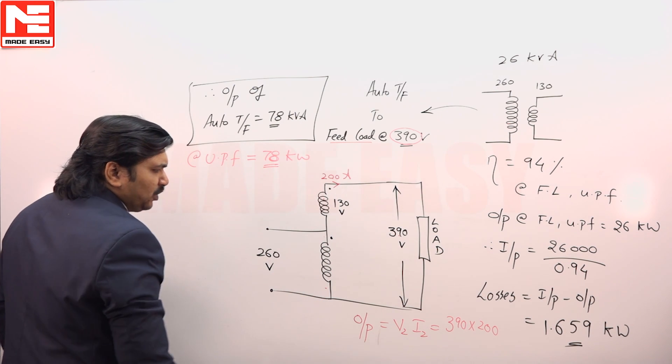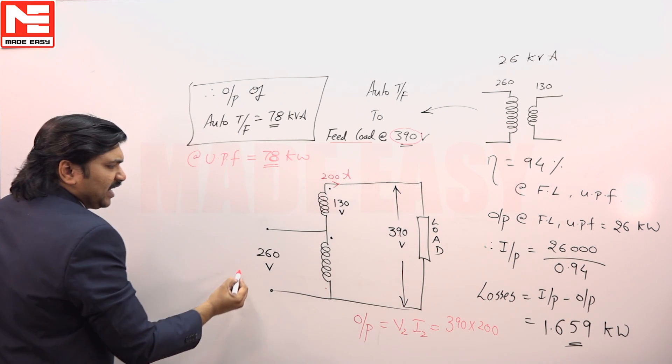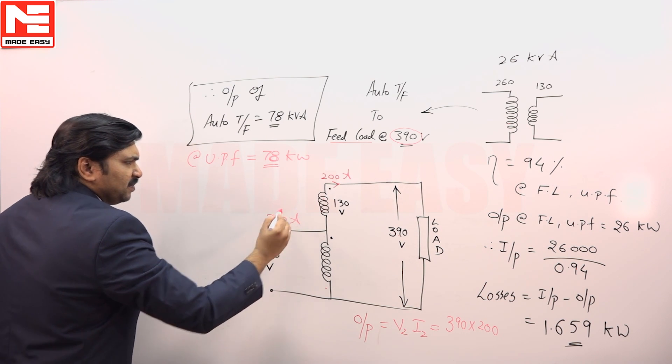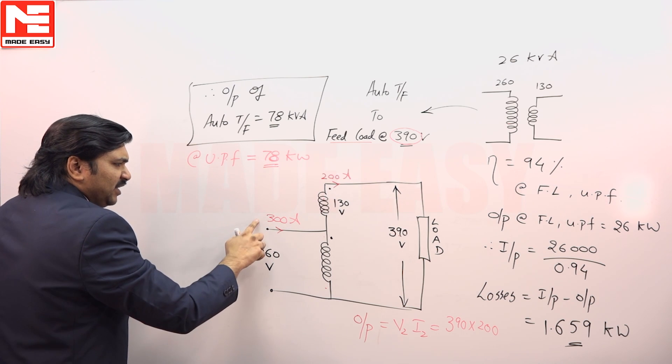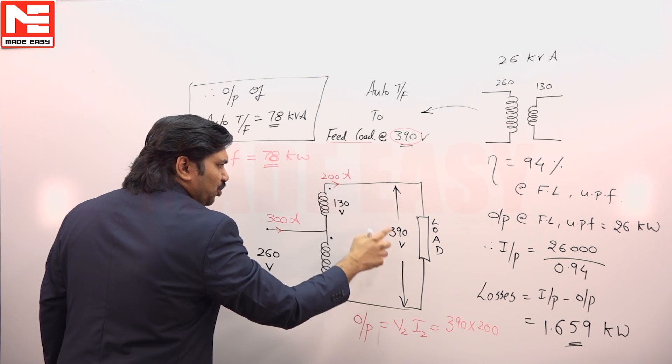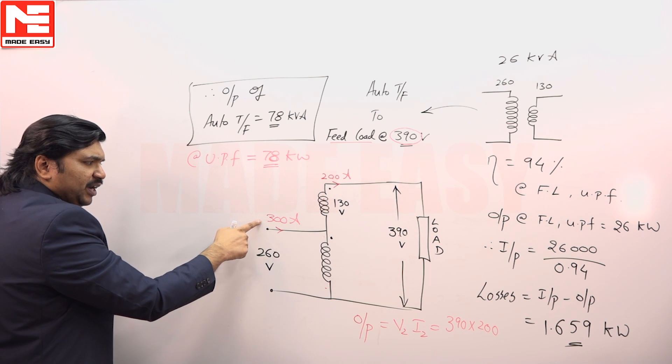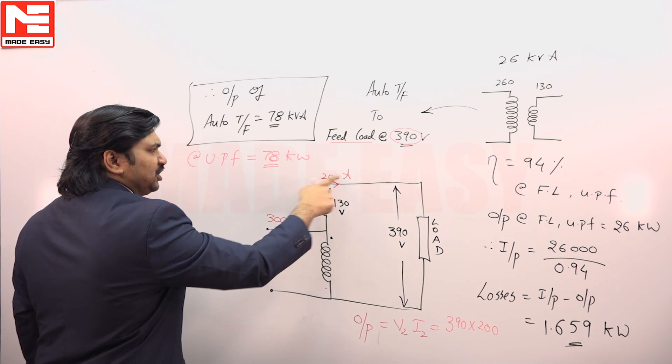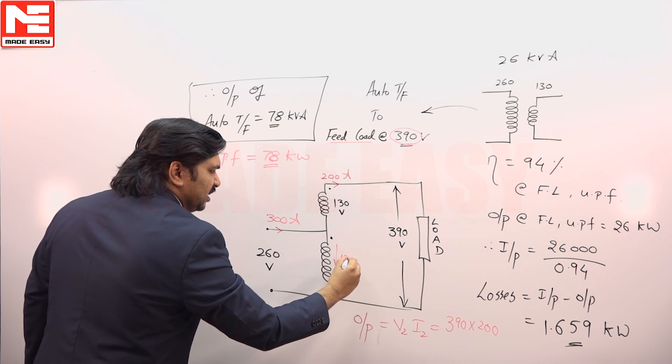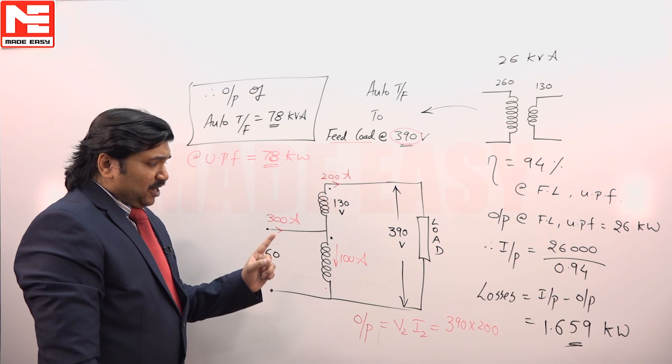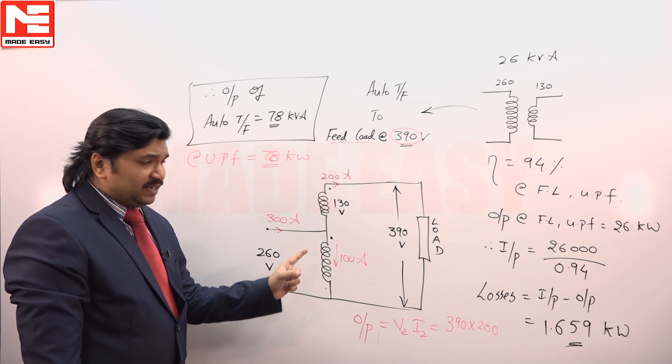Observe the current flowing in this is 200, and if you calculate V2 I2 is equal to V1 I1, this is V1, what is I1? Exactly you are going to get 300. V1 I1 is equal to V2 I2 - if you substitute, you know V2, you know I2, you know V1, what we calculate I1, that is 300. You are getting this is 300, this is 200.